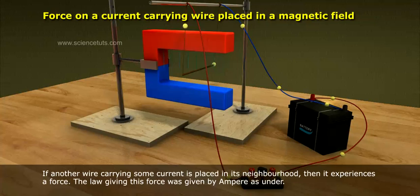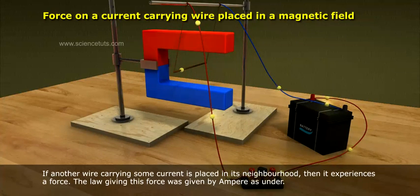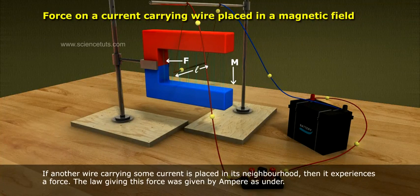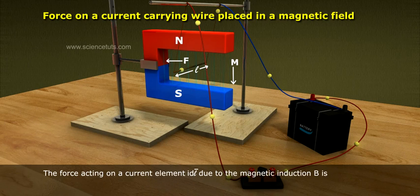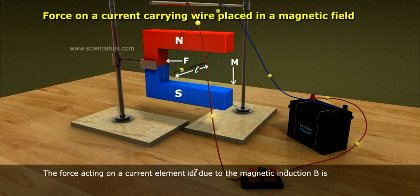A magnetic field is created around the wire carrying an electric current. If another wire carrying some current is placed in its neighborhood, then it experiences a force. The law giving this force was given by Ampere as under.